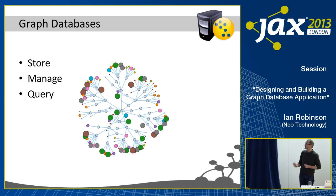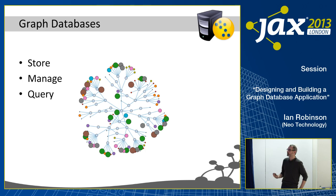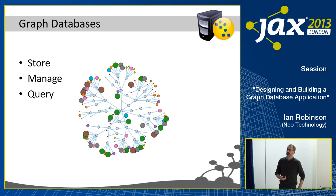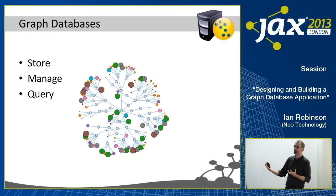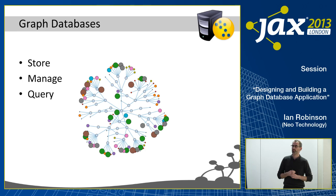A graph database is simply an OLTP database — an online transactional system — the kind of thing you'd insert between a web request and a web response. It's a drop-in replacement for perhaps your SQL database serving end user requests, but it allows you to store, manage, and query your data in the form of a graph. You model your data as a graph, persist it as a graph on disk, and then query it by looking for graph patterns rather than dealing with tables and foreign keys.